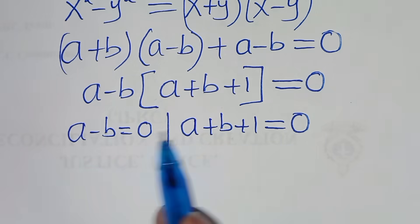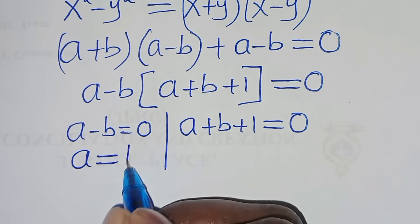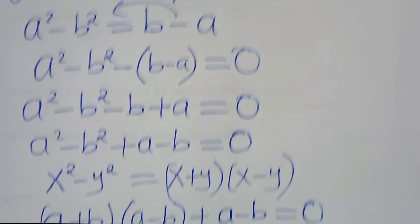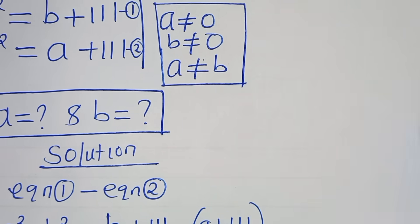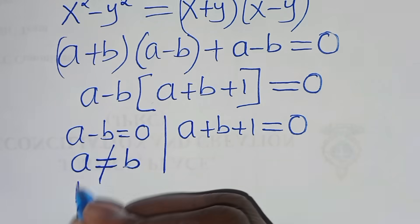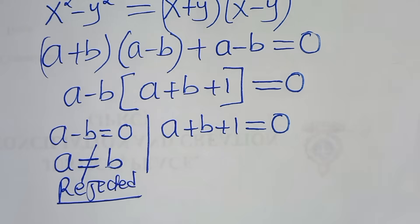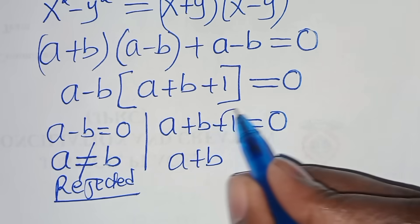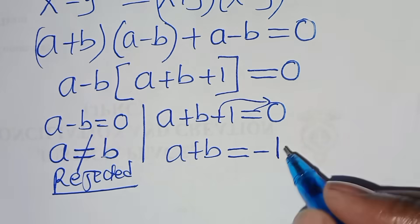From the first part, a minus b equals 0 implies a equals b. This violates the condition that a is not equal to b, so this part is rejected. Let's proceed with the second part: a plus b plus 1 equals 0, so a plus b equals minus 1. Let's call this equation 3.